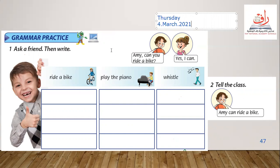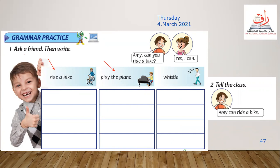We have seven days. Let's go to the grammar practice: ask friends, then write. This question — I tried to make it with the students as a game in the classroom. We have something here: number one — ride a bike, then play the piano, then whistle. For example, Emmy is asking 'Can you ride a bike?' and she answers 'Yes, I can.'